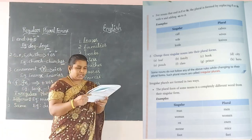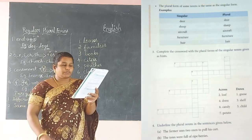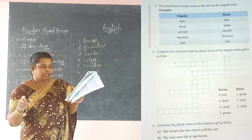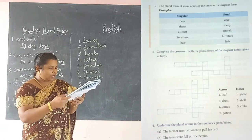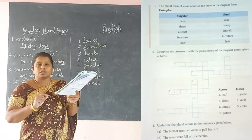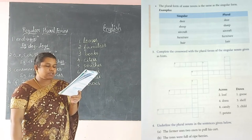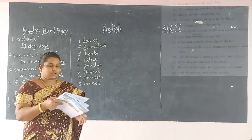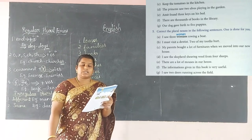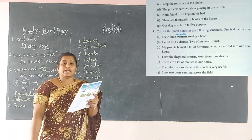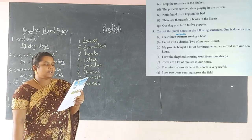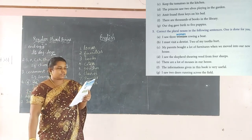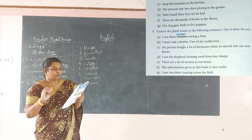Take page number nine — this is your homework. For example, 'loaf' ends with F — cut F and add VES. Fill in all the boxes the same way. For the next exercise, underline the plural nouns in the sentences: 'oxen' — underline; 'trees' — S is there, plural, underline; 'tomatoes' — ES is there, underline; 'elves' — VES, underline; 'keys' — underline; 'books' — underline; 'puppies' — plural form, underline.